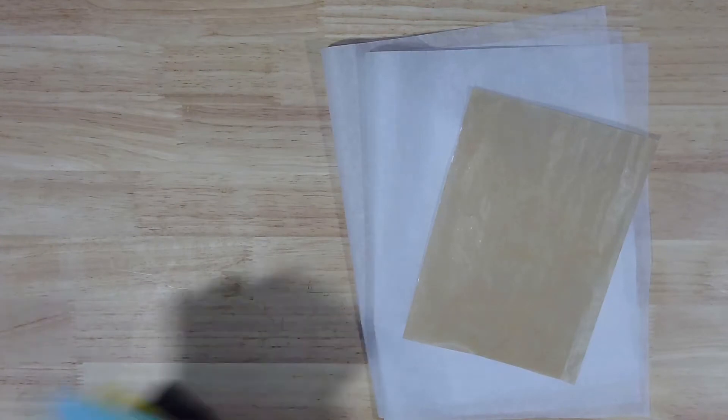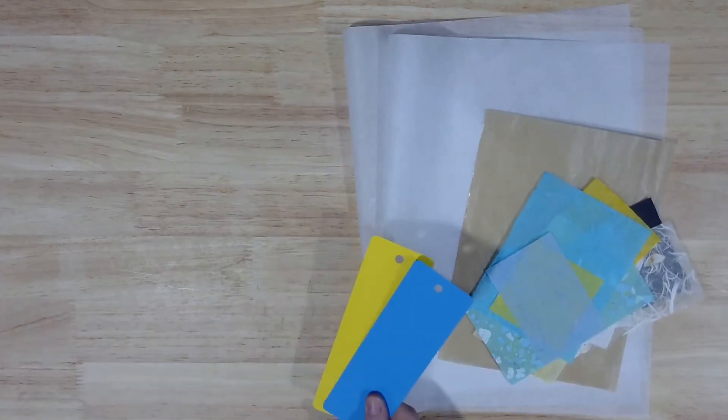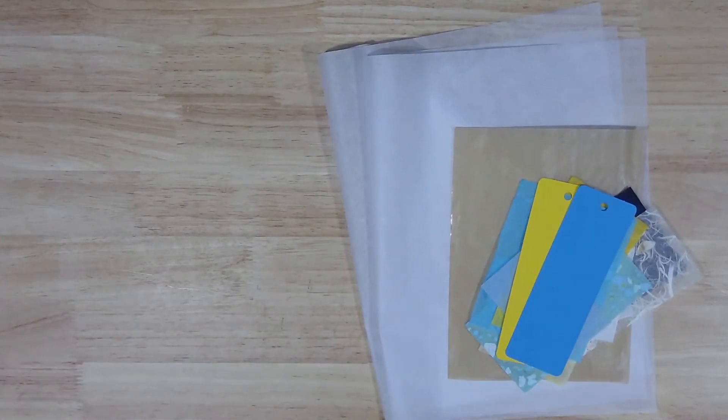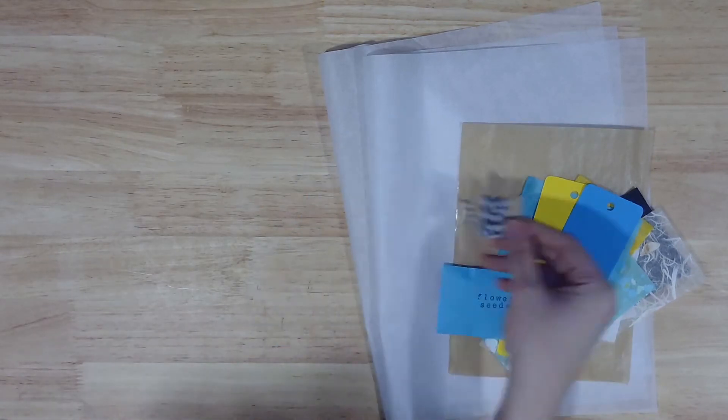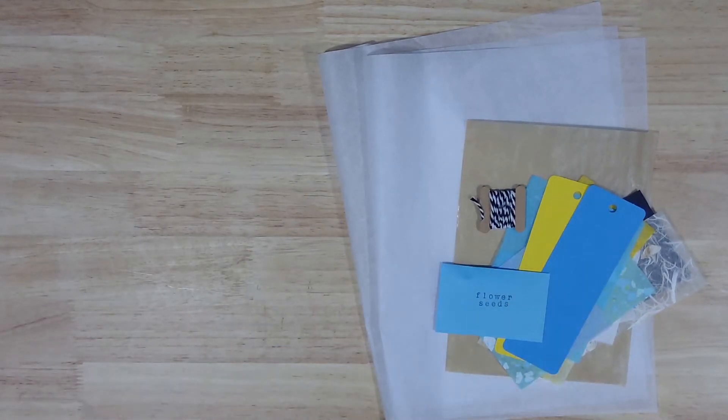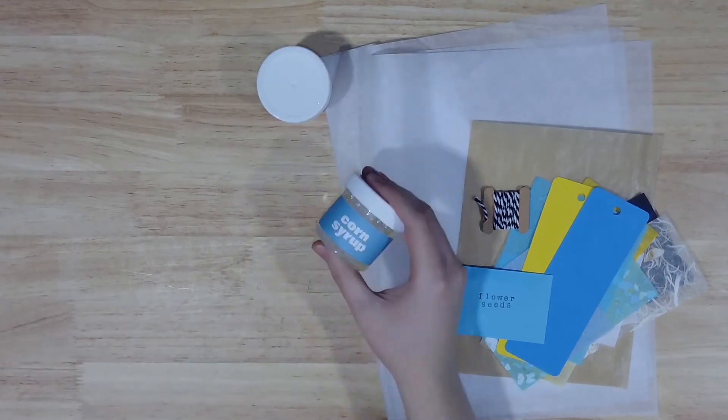Here's what you'll find inside this month's kit. Two large sheets of white tissue paper, two small sheets of parchment paper, a stack of mulberry paper scraps, two pre-cut paper bookmarks, a packet of wildflower seeds, a bobbin of baker's twine, three small jars containing cornstarch, corn syrup, and white vinegar.